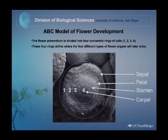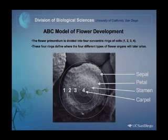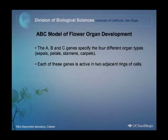The flower primordium is divided into four concentric rings of cells — rings one, two, three, and four — which define where the different flower organs will later differentiate. The ABC model gets its name because of the ABC genes. The A, B, and C genes are responsible for determining the identities of the different organs: sepals, petals, stamens, and carpels. Each of those genes is active in two adjacent rings of cells. The A gene is active in rings one and two, the B gene is active in rings two and three, and the C gene is active in rings three and four.